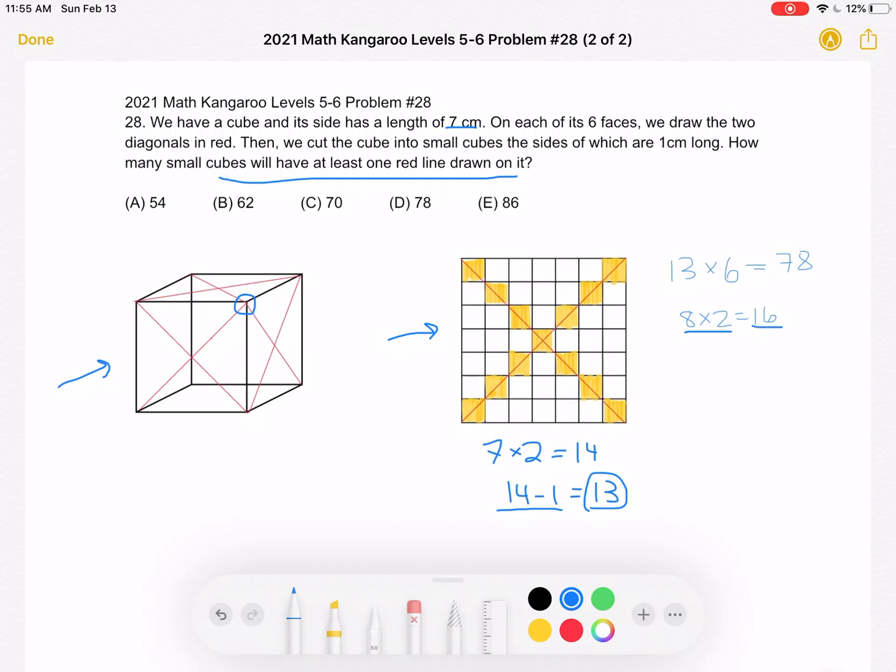So 8 times 2 is 16, and then we do the total 78 minus 16 to get a total of 62, and that is answer choice B.